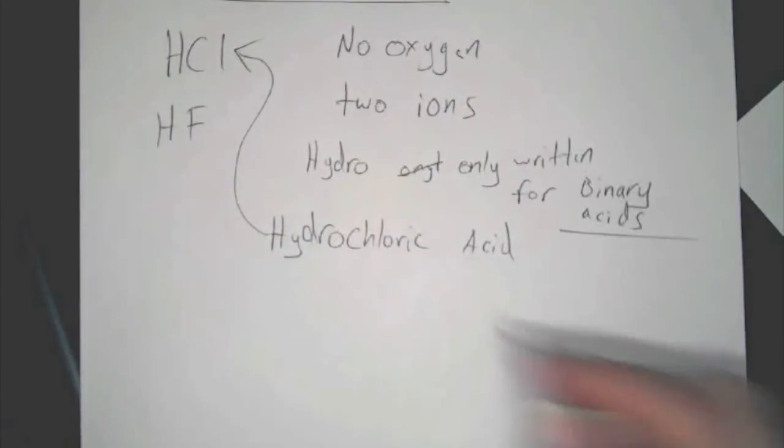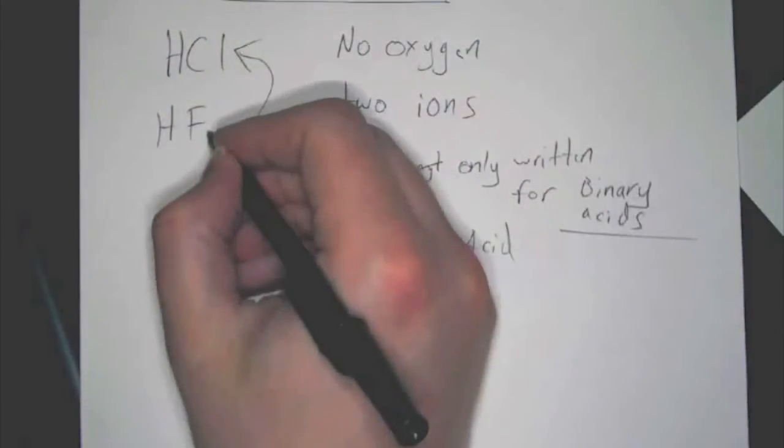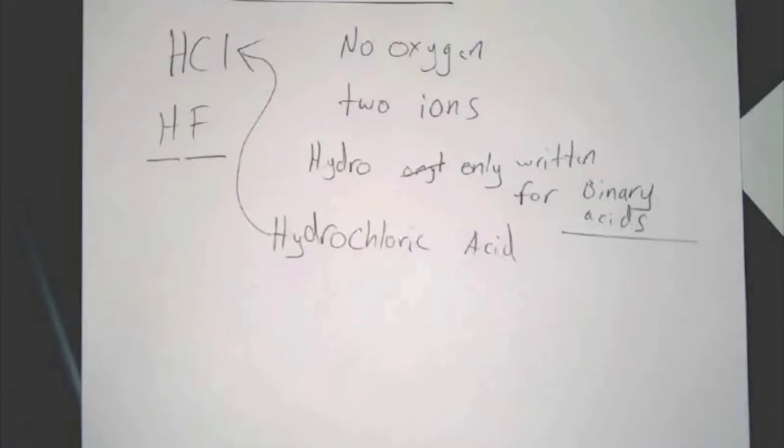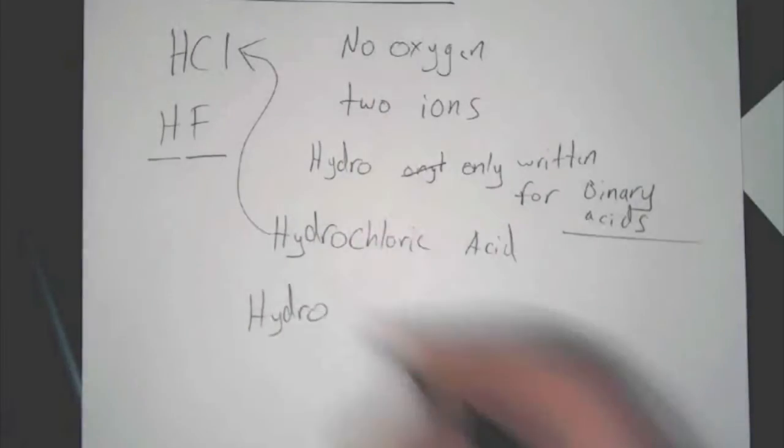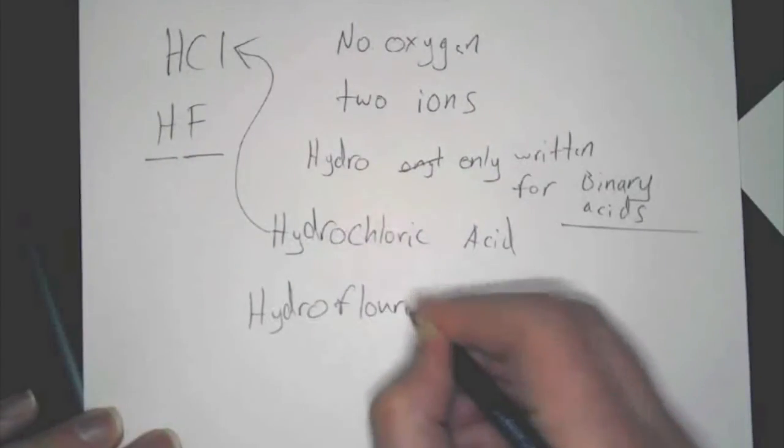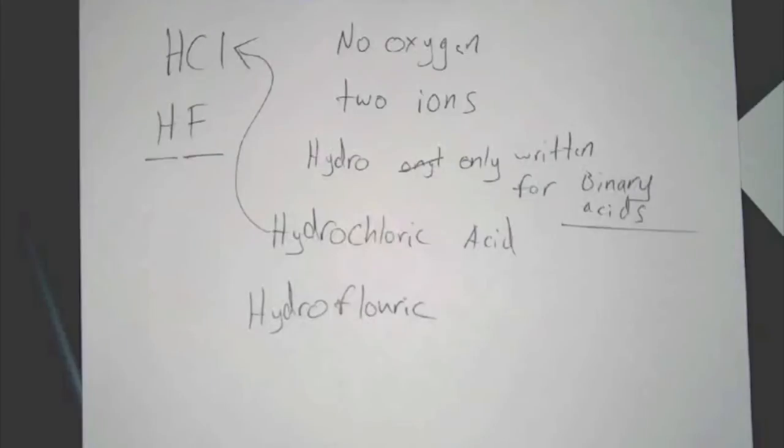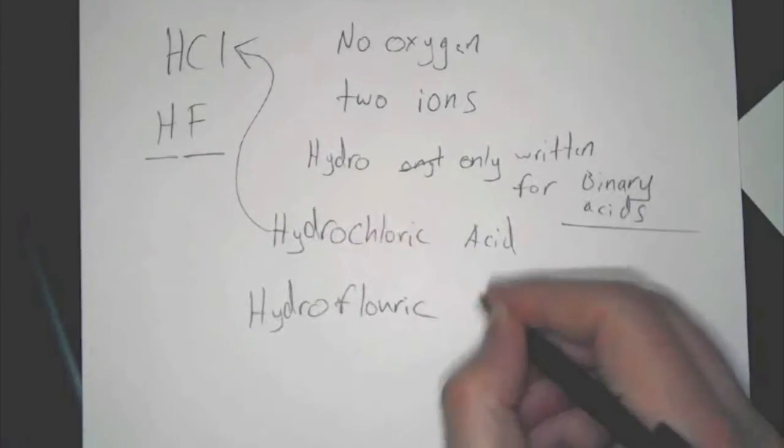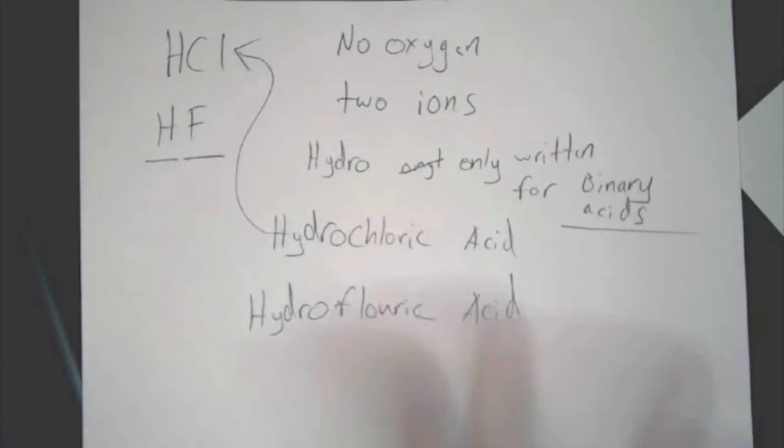The next one's hydrofluoric. So, the reason being, it's binary. It's two things. There's a hydrogen in front. There's always a hydrogen in front for our purposes, for oxy or binary acids. So that would be hydrofluoric. Because you write hydro. Then it's fluoride, which you change. So, hydrofluoric acid.